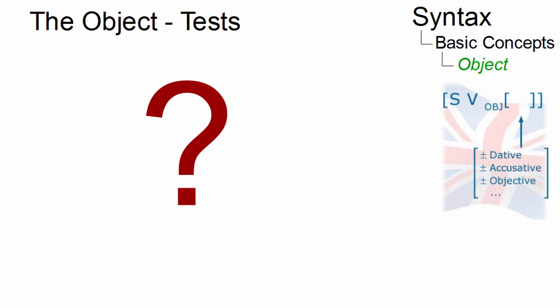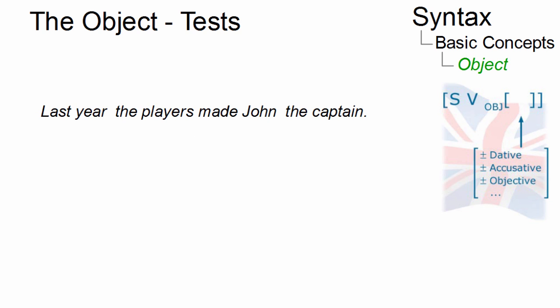But how do we find out whether a noun phrase or a clause is the object of a sentence? In last years, the play has made John the captain, we have four noun phrases. But which one is the object?